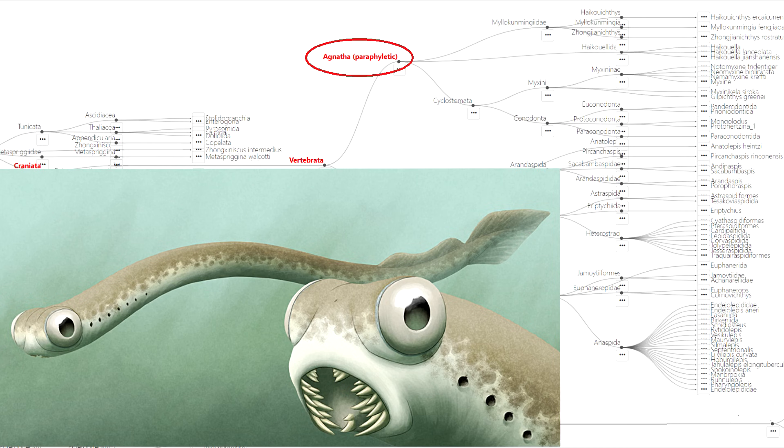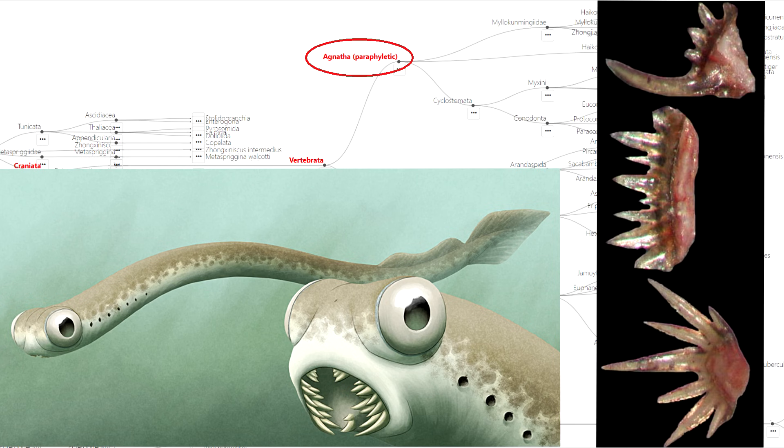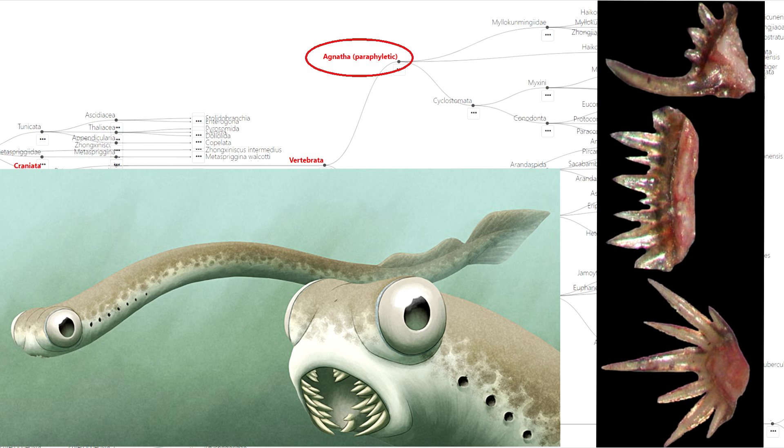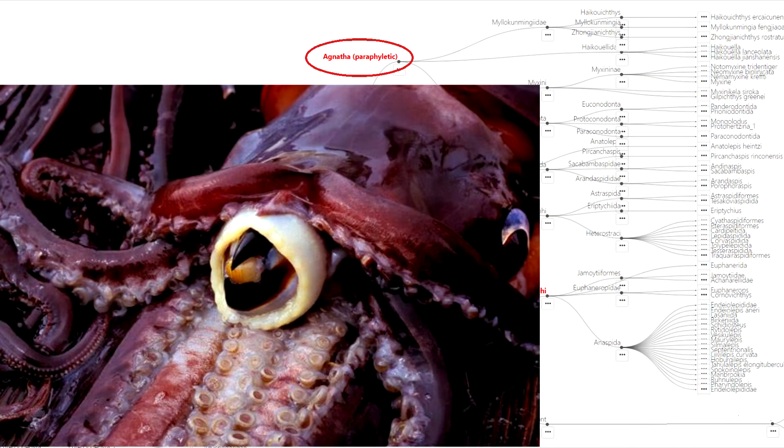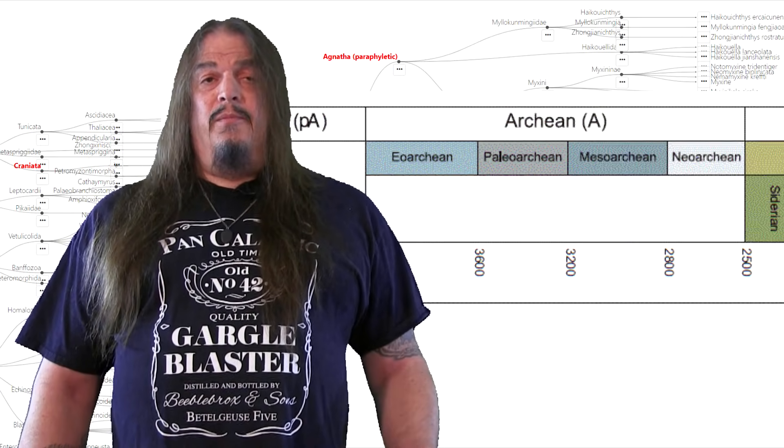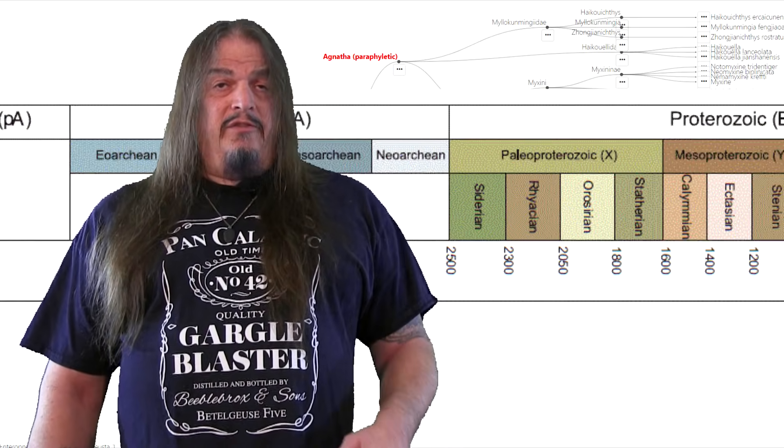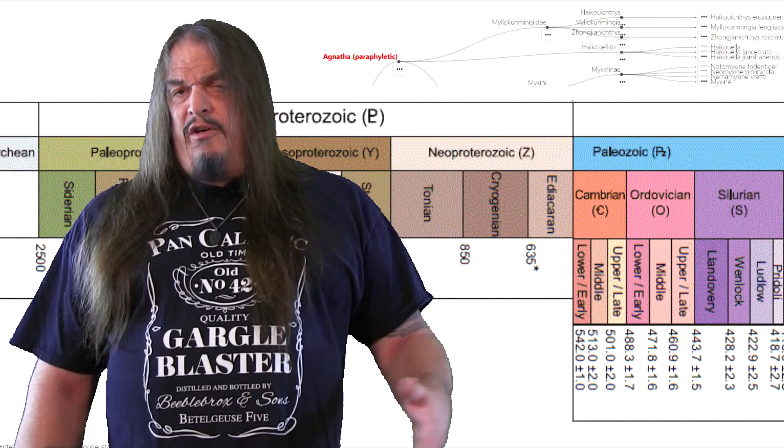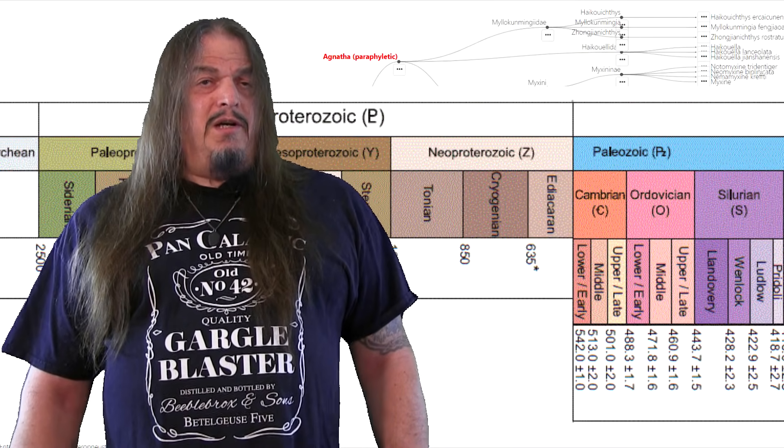Agnatha also included eel-like conodonts which had pretty serious teeth, and these fossil fish likely had their teeth rooted in a tough membrane like the hard beak in a squid or the vicious hooks in their tentacles. Each of the species mentioned so far in this series evolved in the Cambrian or prior to that, but the clades I'm about to mention evidently emerged in the Ordovician period or later, because not all of these lineages appeared at the same time.